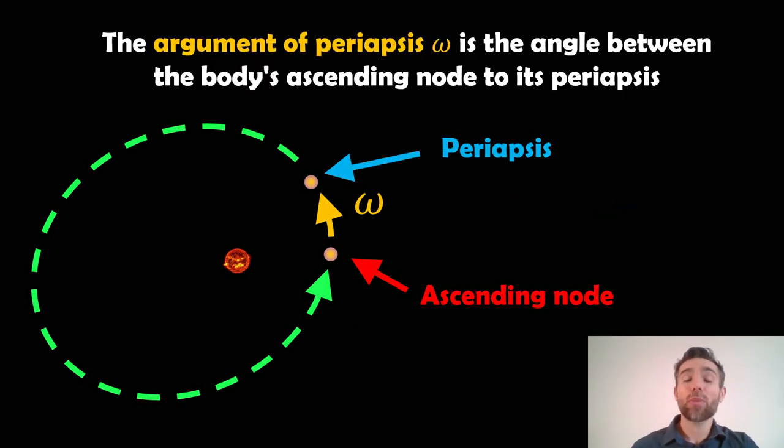Now the argument of periapsis is the angle between the body's ascending node and the periapsis. So depending on where they occur on the orbit, you'll have some angle, and that's what the argument of periapsis is.